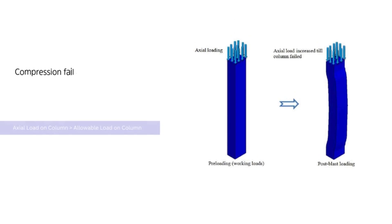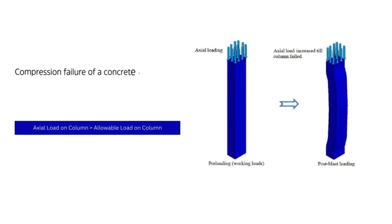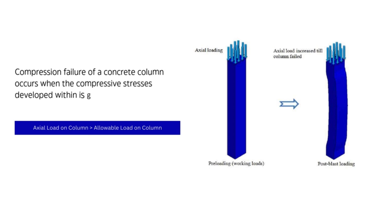Compression failure of a concrete column occurs when the compressive stresses developed within the column are greater than the allowable stress of the column. When axially loaded, both steel and concrete within the column experience stress. As the load increases beyond the column's capacity, the steel and concrete reach their yield strength, leading to immediate failure without significant lateral deformation.